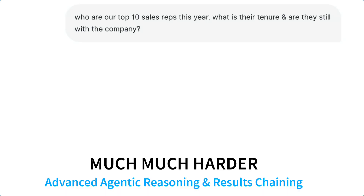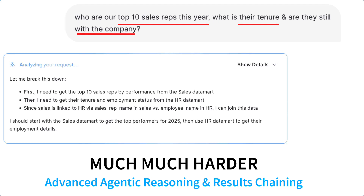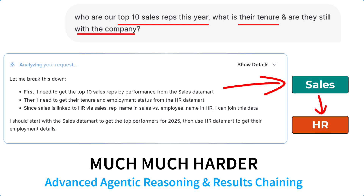This segment is about advanced reasoning and results chaining to solve complex problems. AI breaks the question into ordered tasks, ensuring the output from one step — like identifying top sales reps — is used as the exact input for the next HR step to get their tenure, which results in a complete answer.